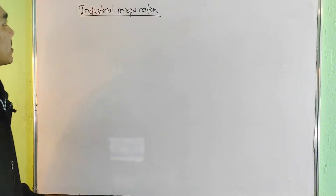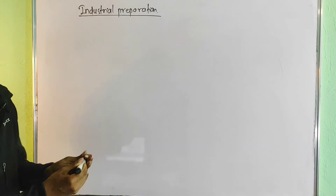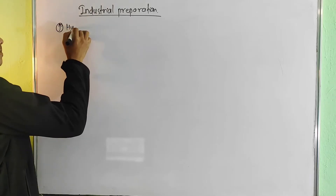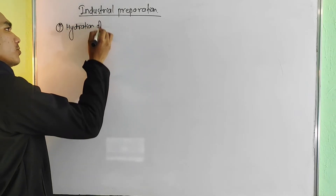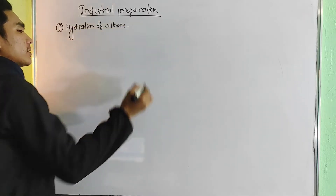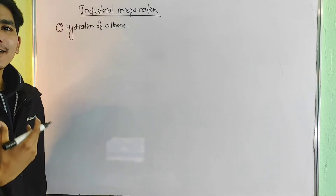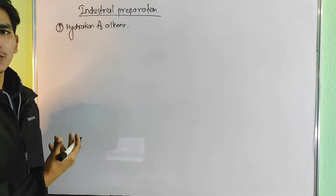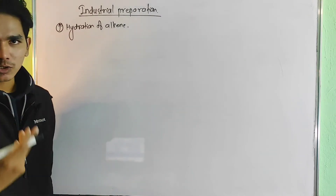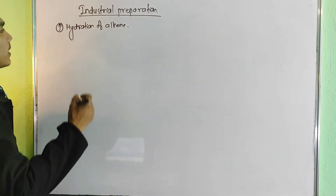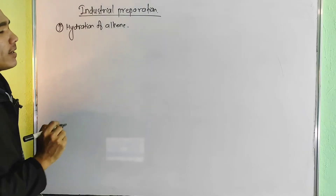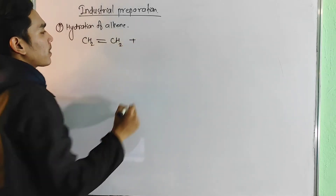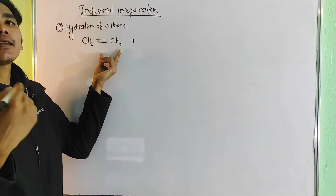I will start with the first topic. We will write: hydration of alkene. For hydration of alkene, what we do is take an alkene as an example. First, we check whether the alkene is symmetrical or unsymmetrical, and add water accordingly. We must add to the second carbon.